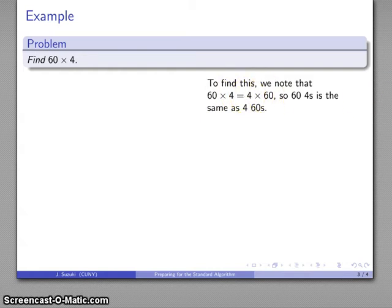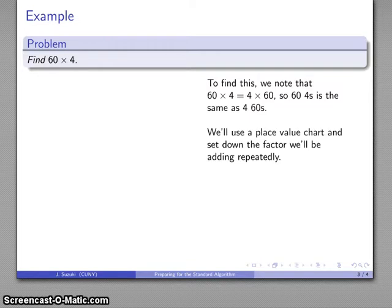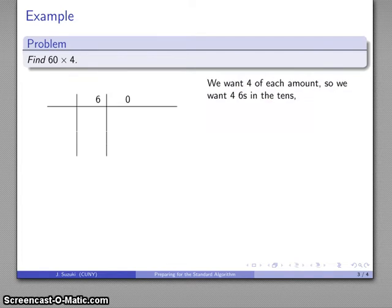The reason that interchange is useful is that I don't really know at this point how to add 64s together, but I can add 4 60s a lot more easily. I'll use the place value chart and I'll set down the factor that I'll be adding repeatedly. So I'm adding 4 60s. Here I have, here's my 1s, here's my 10s. 60 is 6 10s, 0 1s.